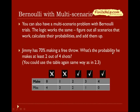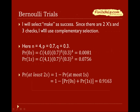Jimmy has a 70% chance of making a free throw. What's the probability that he makes at least 2 out of 4 shots? I've made a table the same way as before, with success in one row and failure in the other. I consider 'make' to be success and list out the entire sample space. We can see that two outcomes don't work because we need at least 2 successes.